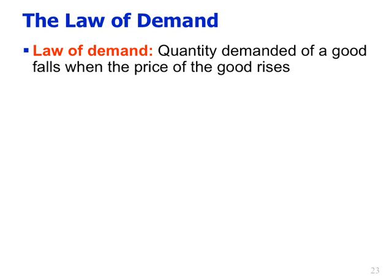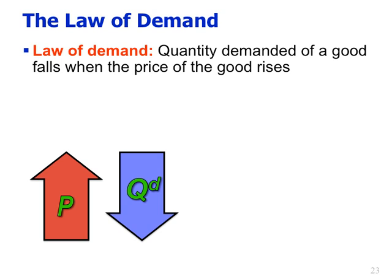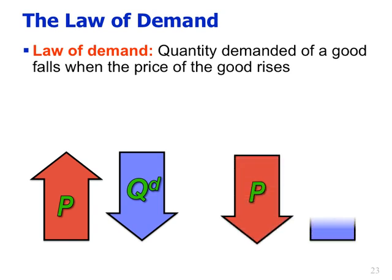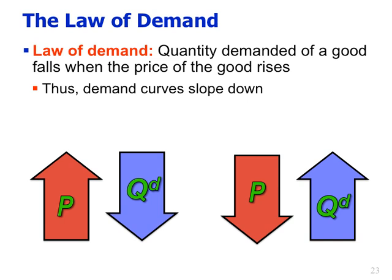The law of demand says that the quantity demanded of a good falls when the price of the good rises — there's an inverse relationship between price and quantity demanded. As price goes down, quantity demanded goes up. This means the demand curve slopes down. One way I remember it is 'demand to the land' — the demand curve goes down to the land.